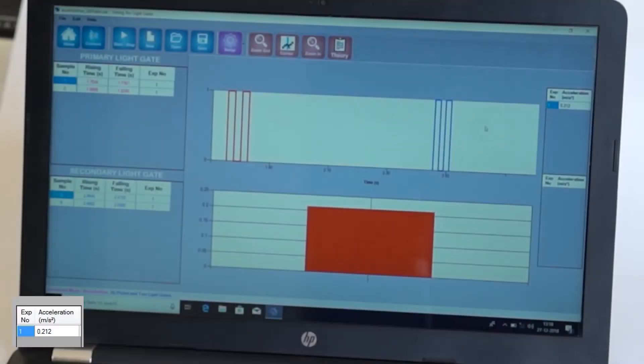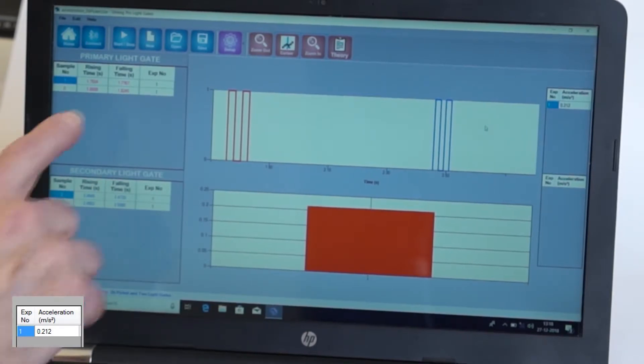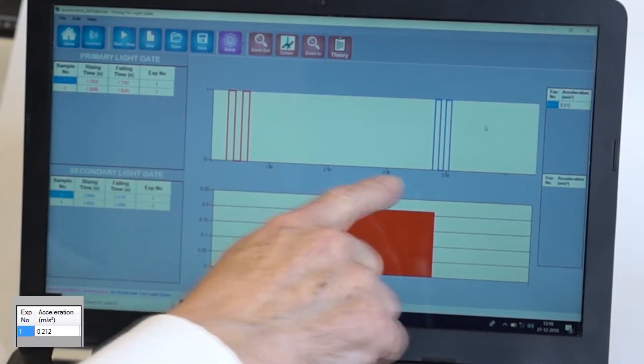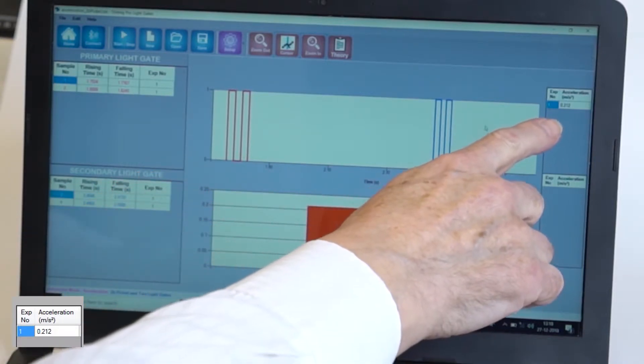Repeating the experiment with different falling masses provides data to establish the relationship between force and acceleration, that is Newton's second law. A single run has been captured here, showing the interrupt times for the two gates and the calculated acceleration.